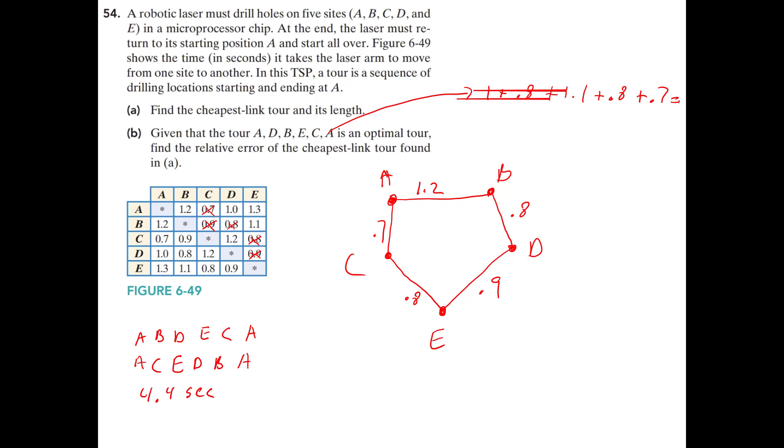Looks like we're getting the same one. Maybe I did something wrong. Let me recalculate that. I recalculated it and I got the same 4.4 and I got the cheapest link was 4.4. So there is no error. So there was a 0% error. So by using the cheapest link tour, we got the same answer as the optimal tour. And everything worked out great.